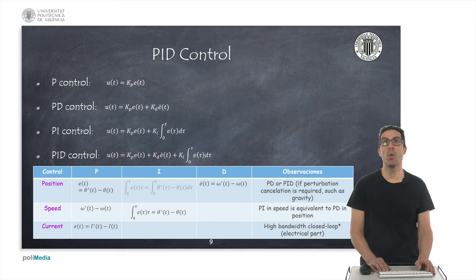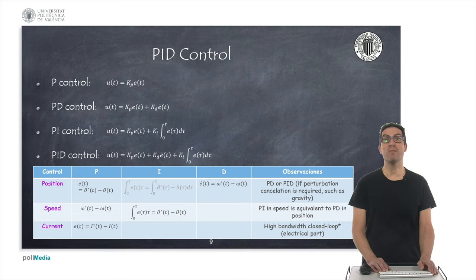A PID controller is a well-known controller in the industry that allows regulating a process using three constants or gains that act, each of them, on the error variable to be controlled. Thus, the proportional action P generates a control action that is proportional to the error signal. Action D, the derivative, generates a control action proportional to the derivative of the error, which combined with the proportional action generates a PD controller. The I action acts on the integral of the error, which combined with the proportional action would generate a PI controller. And if we combine all of them, then we have the PID controller. In the table, I show the error variables that we would use for position, speed and current control of direct current motors.